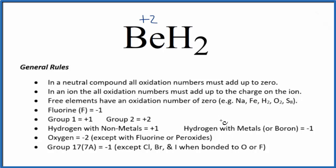Hydrogen, when it's bonded to a metal, so beryllium, that's a metal, it's going to be negative one. So each hydrogen is going to have the oxidation number of minus one.